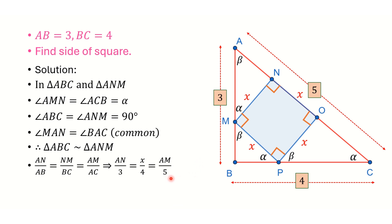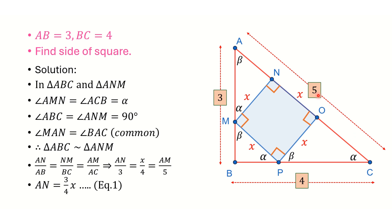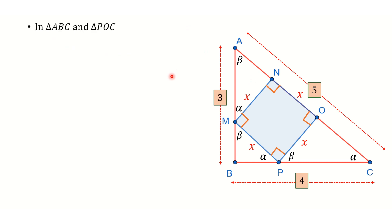From the proportion AN/3 = x/4, cross-multiplying gives AN = 3x/4. This is Equation 1. Now I know AN in terms of x. If I can also express OC in terms of x, I can add all distances along AC and equate to 5 to find x.